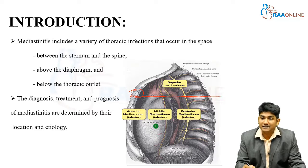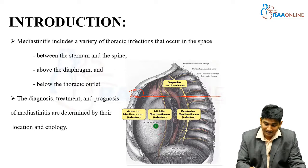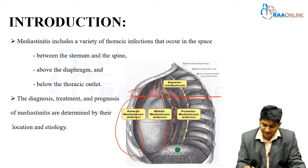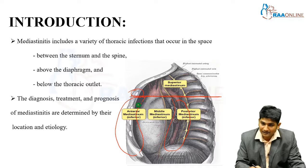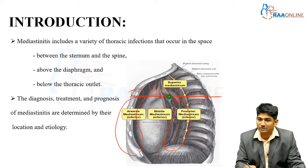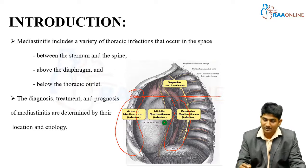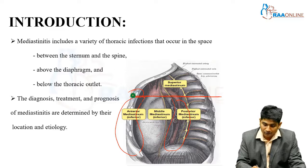The inferior mediastinum is further divided into anterior, middle, and posterior mediastinum. From the sternum to the pericardium is the anterior mediastinum; at the pericardium is the middle mediastinum; and from the pericardium toward the spine is the posterior mediastinum. All three come under the inferior mediastinal category.